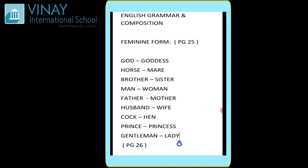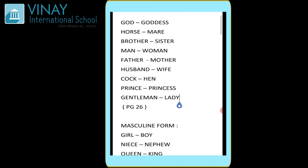Here we are going to understand the exercise with the answers from your English Grammar and Composition, page number 25. The first question is: give the feminine form of the following. Humme iske feminine form mein answers dene hai. The first question is 'god.' For example, if I say Krishna Bhagwan, that is god, that is masculine form. But when I say Saraswati Mata, it becomes goddess — the feminine form.